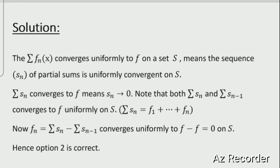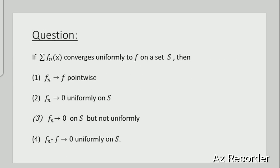Note that both S_n and S_{n-1} converge to f uniformly on S. Since S_n = f_1 + ... + f_n, we have f_n = S_n - S_{n-1}, which converges uniformly to f - f = 0 on S. Hence option 2 is correct: f_n converges to 0 uniformly on S.